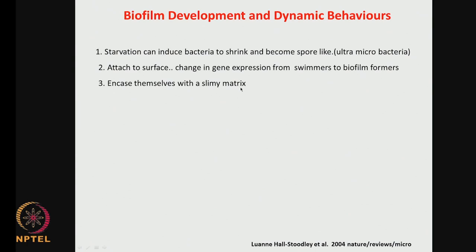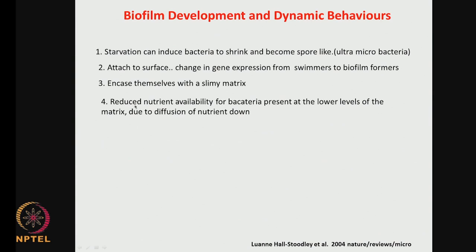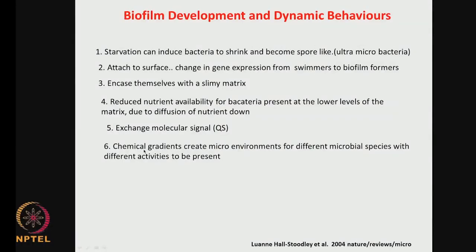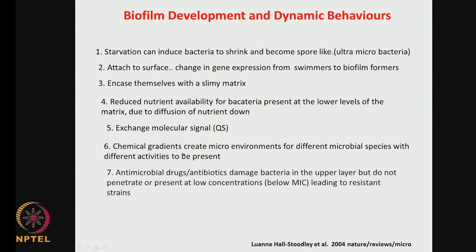Bacteria can encase themselves with a slimy matrix called exopolysaccharide — a lot of sugar — forming a slimy matrix on top. Because of reduced nutrient availability for bacteria at the lower level of the biofilm, nutrition diffusion also slows down. The bacteria stop growing and reach a starvation condition, and there could be a change in gene expression. Bacteria forming biofilms produce a chemical called quorum sensing, thereby changing their gene expression and moving from the sassile to the colonizer stage. The bacteria can also identify that they are a large population in the colonizing stage.